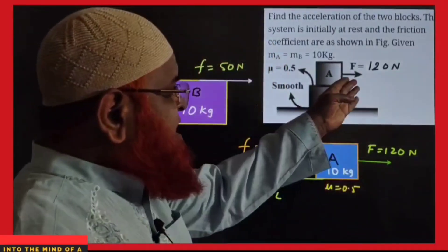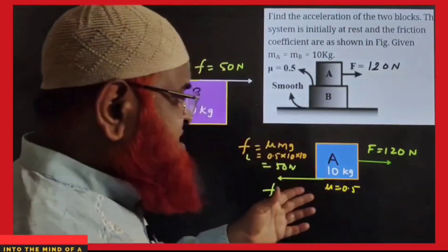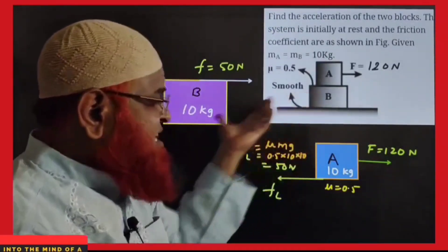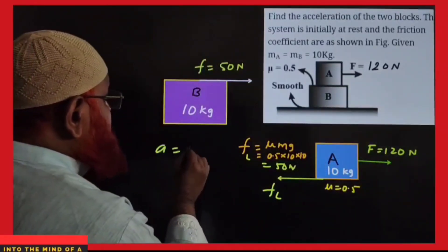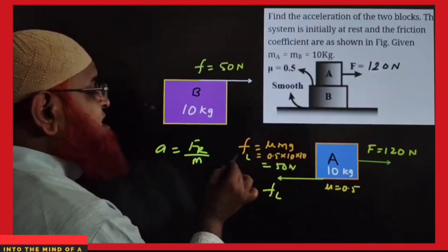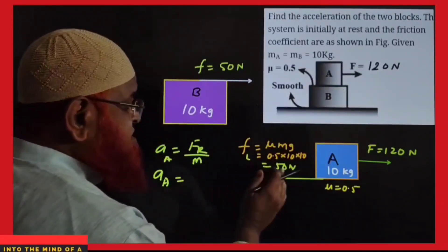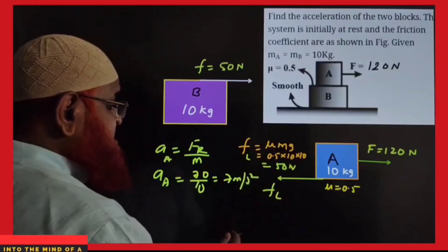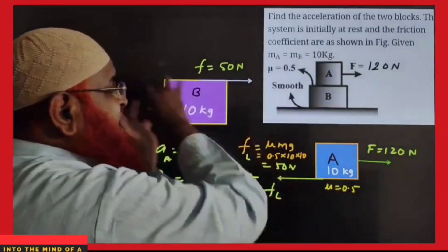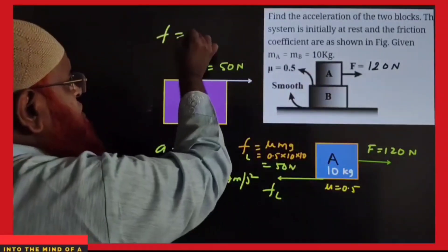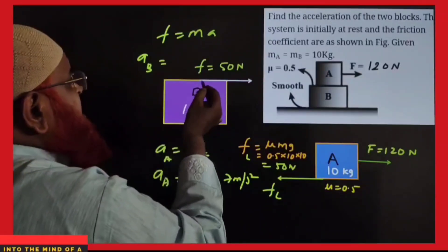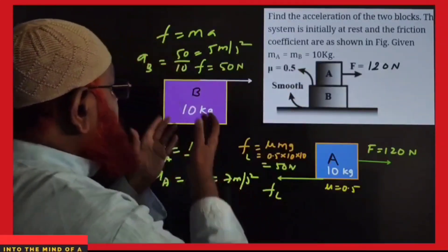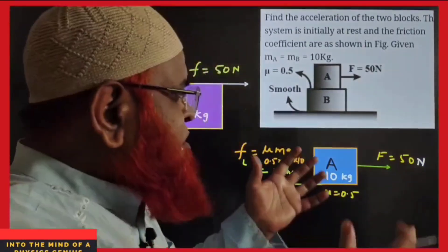A similar block-over-block problem: 120 newtons acts on the upper block. Limiting friction between blocks with μ=0.5 is μmg = 50 newtons. For the upper block: acceleration a_A = (120−50)/10 = 70/10 = 7 m/s². For the lower block, the 50N limiting friction acts as a driving force forward: acceleration a_B = 50/10 = 5 m/s². Upper block: 7 m/s², lower block: 5 m/s².